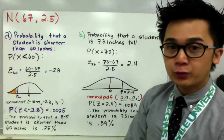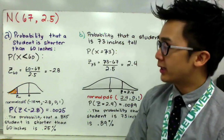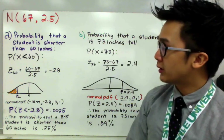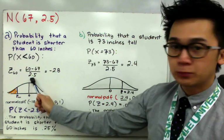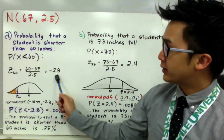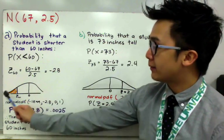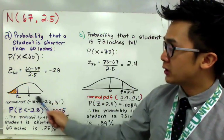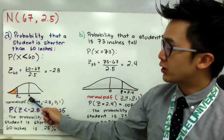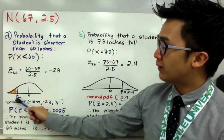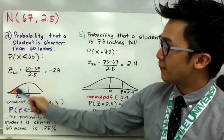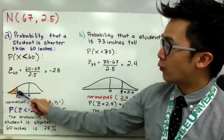To find the Z-score, we use the formula Z = (X − mean) / standard deviation. By direct substitution, we have (60 − 67) / 2.5, which gives us a Z-score of negative 2.8. In a standard normal distribution, the mean is at the center equal to 0 and the standard deviation is 1. Our Z-score of negative 2.8 is the location of Z₆₀ on the left side of the distribution.